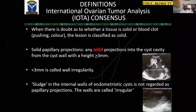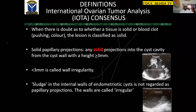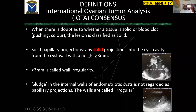A solid papillary projection is any solid projection into a cyst cavity from the cyst wall that measures greater than 3 millimeters, as seen in this case of advanced ovarian cancer in a 25-year-old. When it measures less than 3 millimeters, it is called wall irregularity, not papillary projection. In about 4 to 20% of cases of endometrioma, you will find endometriotic sludge. This should not be confused for solid tissue — it should be termed wall irregularity, not papillary projection. This should be considered wall irregularity.